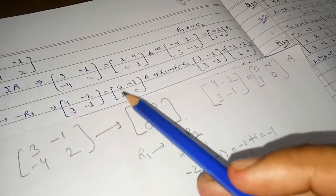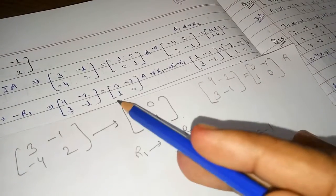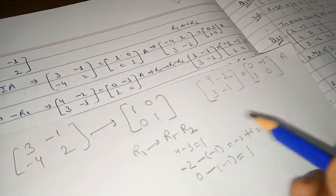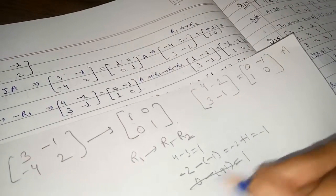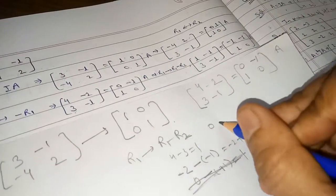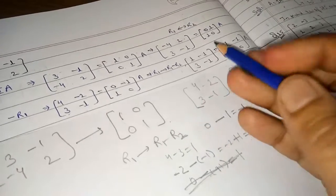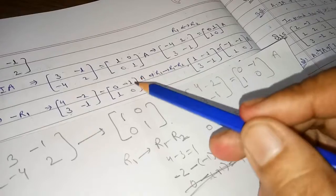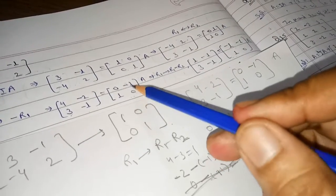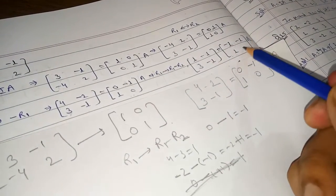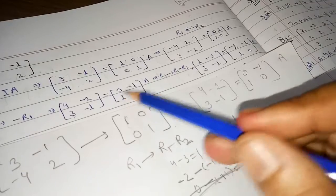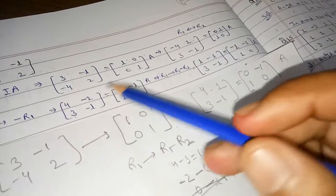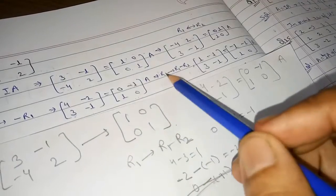To clarify the right-hand side calculation: the first element of R1 was 0, minus (-1) gives 1. The second element was -1, minus 0 gives -1. Row 2 remains [0, 1] as it is. So we now have the left-hand side showing [1, -1; 3, -1] and we've achieved 1 in the first position of row 1.